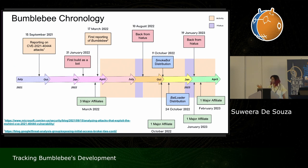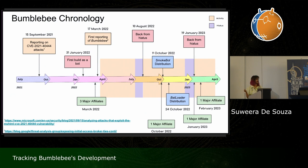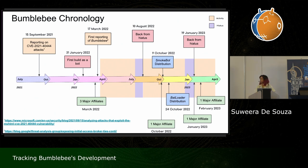Shortly after the first report, there was an uptick in activity — it started spreading more and more. It started off with three major affiliates using the malware, and subsequently more affiliates joined the program. The developers also went on two different hiatuses, and Bumblebee is seen distributed by the likes of Smokebot and Batloader, to name a few.